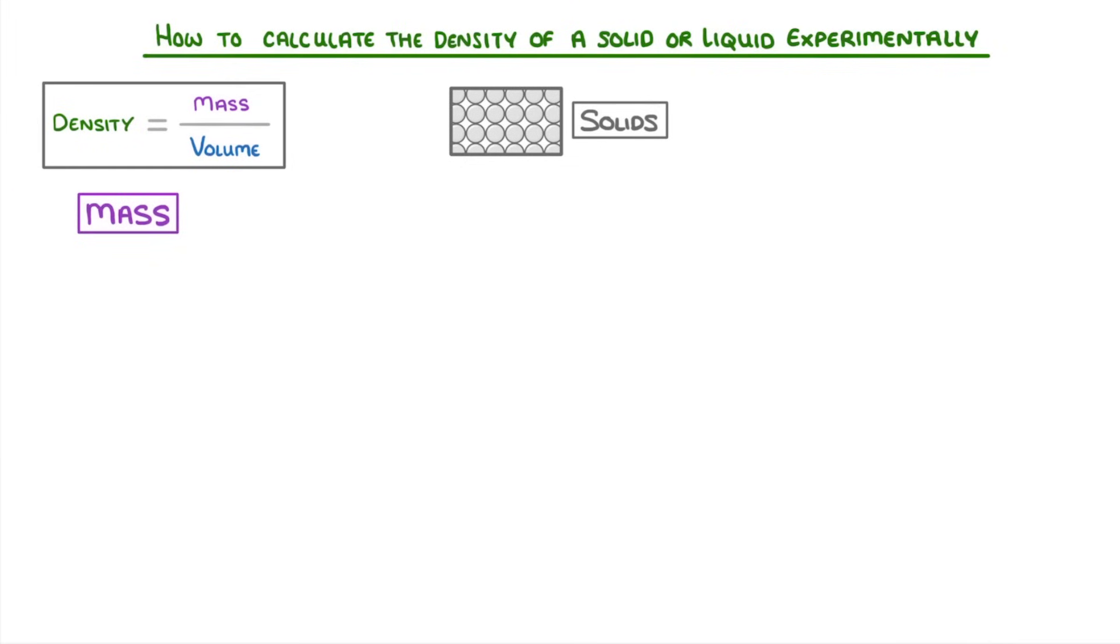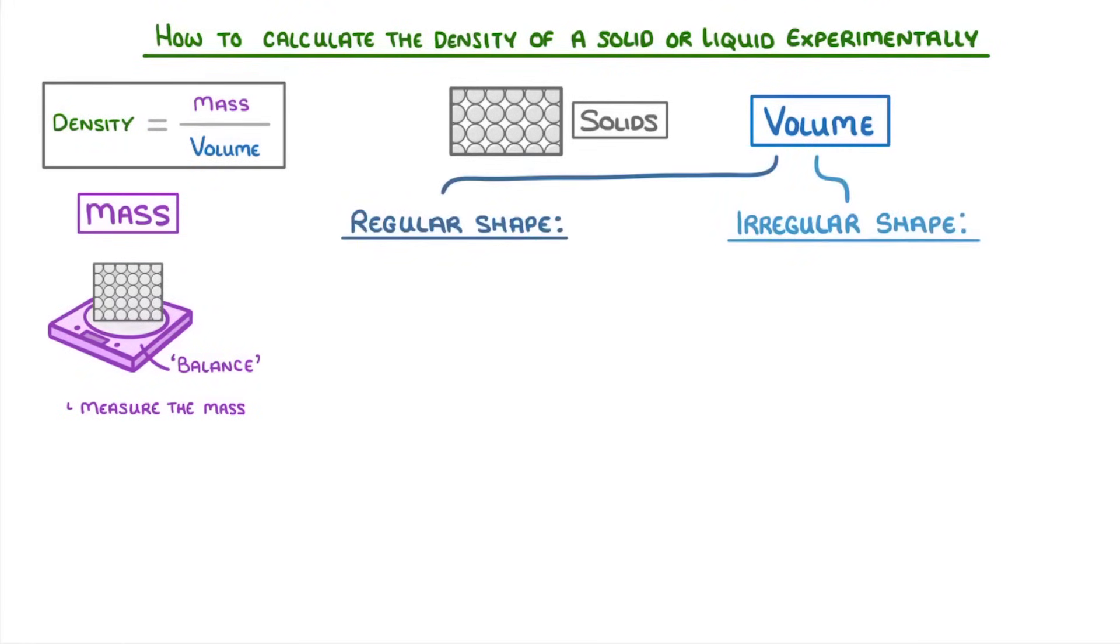Finding the mass is the easy part. We just place our solid on a balance and measure the mass. The volume though is a bit trickier, and depends on whether it's a regular or irregular shape.